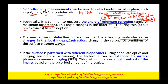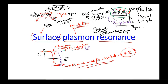If the surface is patterned with different biopolymers using adequate optics and imaging sensors — that is, a camera — the technique can be extended to Surface Plasmon Resonance Imaging, SPRI. When we are using a CMOS camera we are basically doing SPRI.